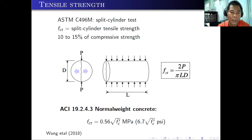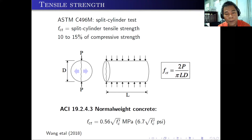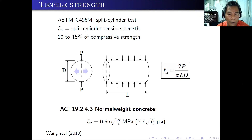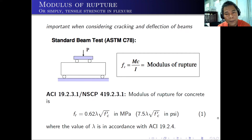We use the split cylinder test to determine the tensile strength. We call FCT the split cylinder tensile strength, which is normally 10 to 15% of the compressive strength. The setup has the cylinder lying on its side with an actual load applied at both sides — the actual load P. According to the formula, FCT equals 2P over (π × L × D), where D is the diameter and L is the length of the cylinder. According to ACI, for normal weight concrete, the split cylinder tensile strength is around 0.56 times the square root of FC prime in megapascal, or 6.7 times the square root of FC prime in psi.